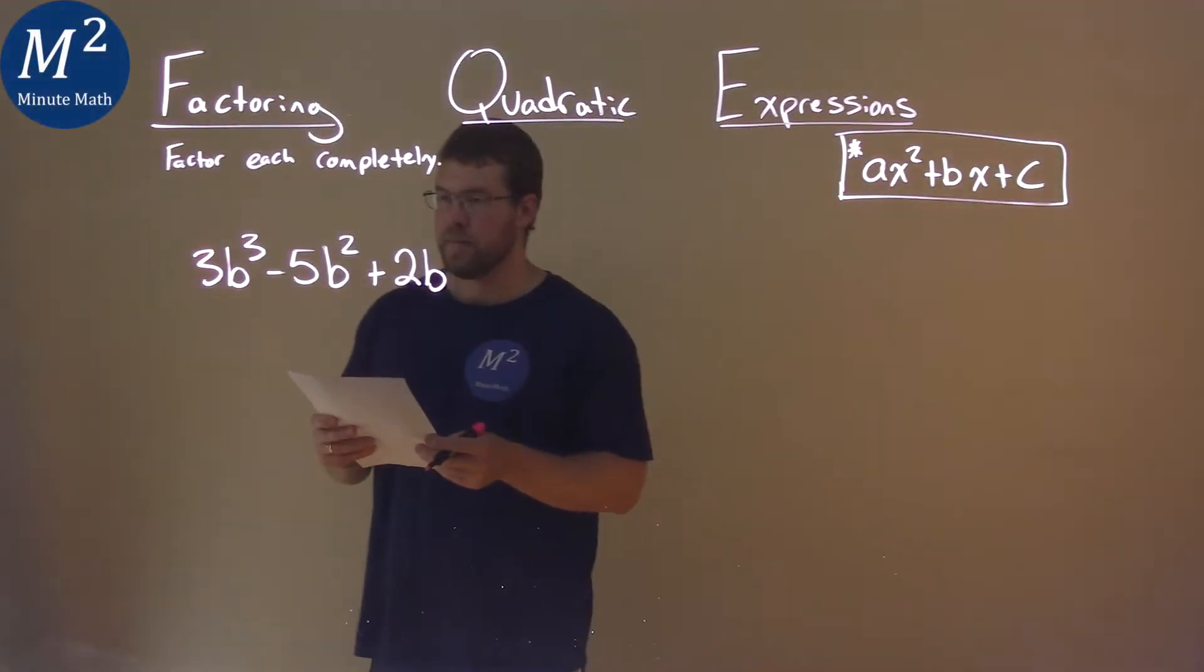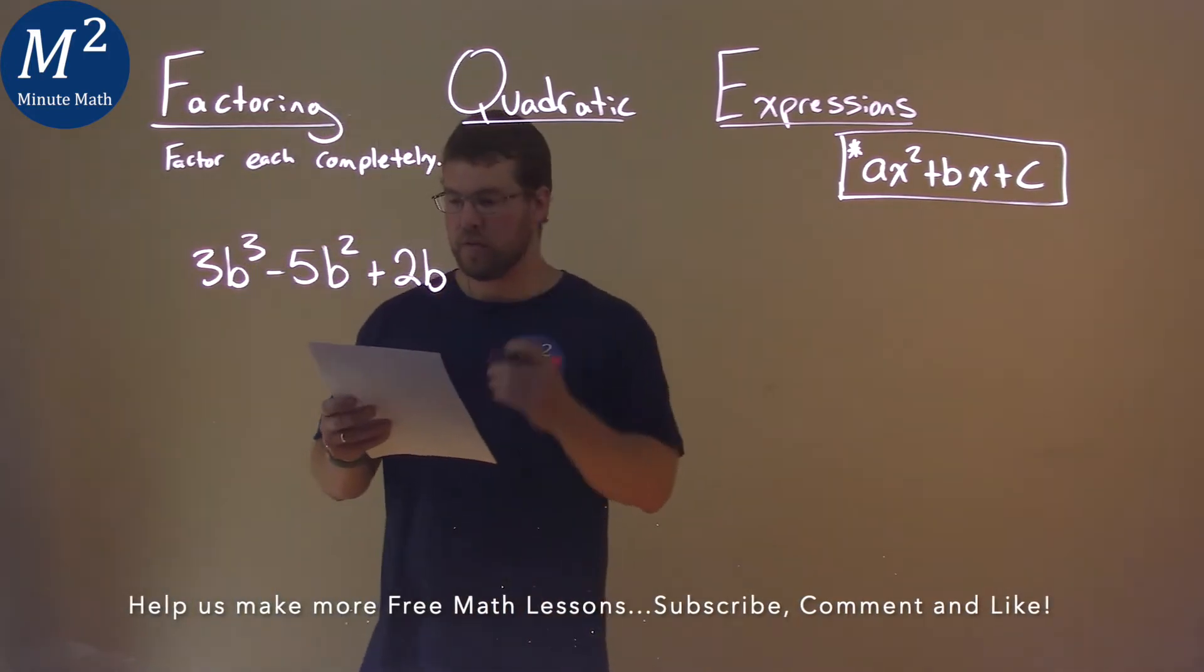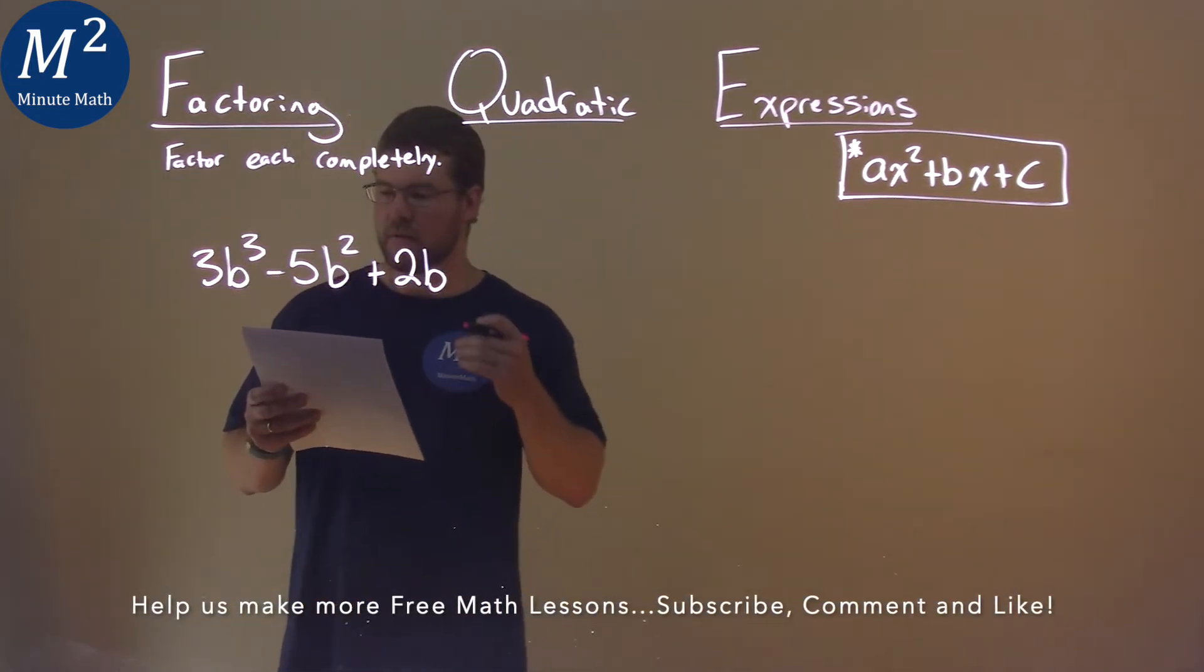We're getting this problem right here. 3b to the third power minus 5b squared plus 2b, and we have to factor this completely.